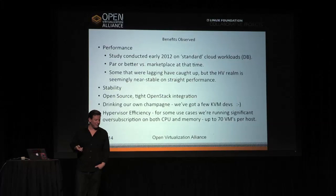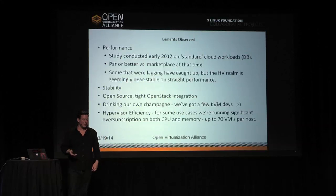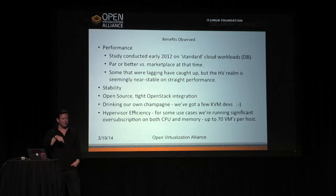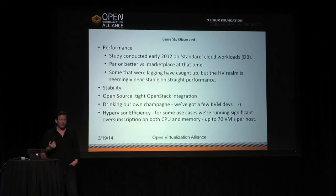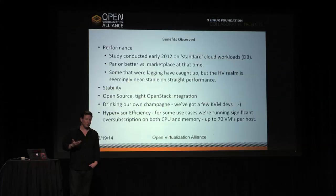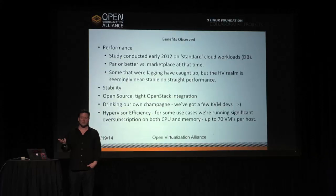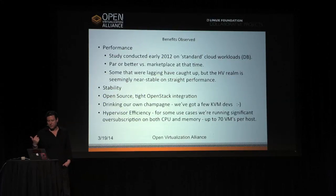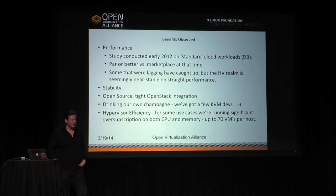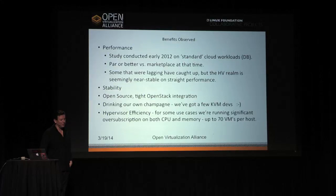There's also the tight OpenStack integration — if you deploy OpenStack, you get KVM, hence the oceanographers-and-water comment. We have KVM developers in-house, so we're very interested in integrating and using it. And for hypervisor efficiency, we get pretty good ratios. For some of our use cases, we're running up to 70 VMs and hundreds of vCPUs per host, and that usually works well, but not always — I'll get into that in a moment.